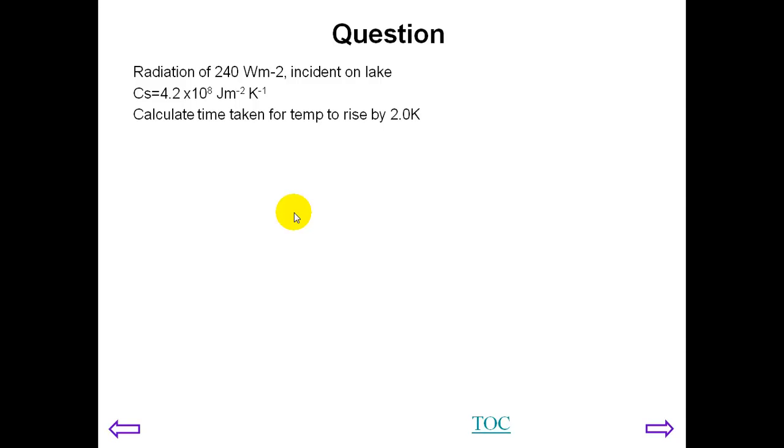Another question. The average radiation falling on a lake is 240 watts per meter squared. The surface heat capacity is 4.2 times 10 to the 8 joules per meter squared per Kelvin. Calculate the time taken for the temperature to rise by 2 Kelvin. Notice this is a huge number, so it is going to take a long time to raise the temperature. You can do this calculation using Q equals AC_s delta T. You need power times time. You have power and need to find time. You know the area is one meter squared. CS is the value, delta T is 2. Time will be something of the order of around 30 days.